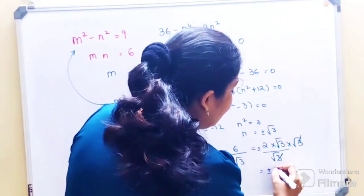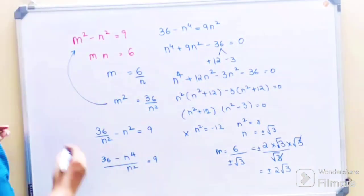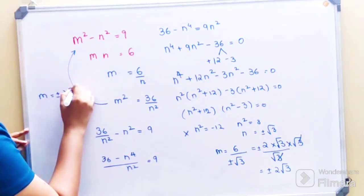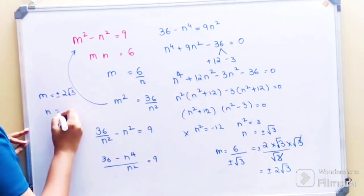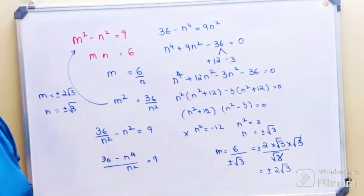So I'm just left with plus minus 2 root 3. So from this I can say value of m is equal to plus minus 2 root 3, and value of n is nothing but what? Plus minus root 3.